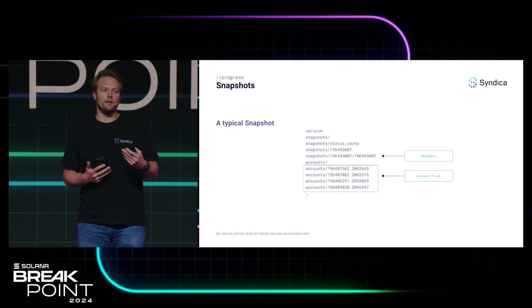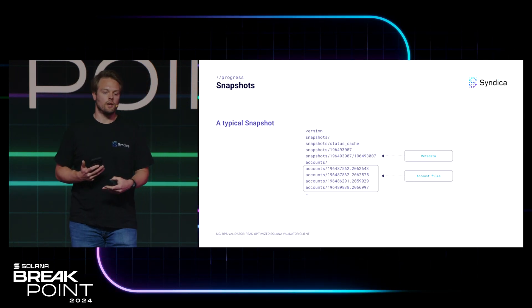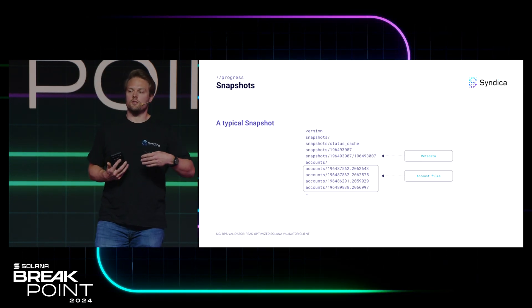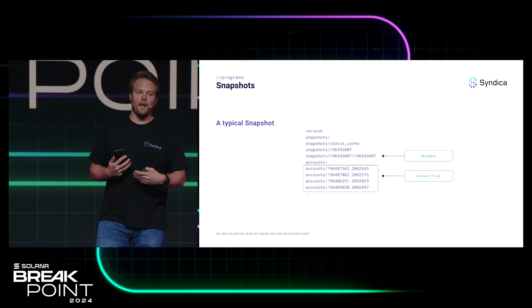If you wanted to find a specific account in the database, one approach would be to look at every single byte in every single file until you find the pub key you're looking for. But this would take a very long time and is not practical. Instead, what you need is an approach where before you ever look for an account, you look one time at the entire snapshot and create a sort of map that you can use to navigate the database and very quickly identify where the accounts are located.